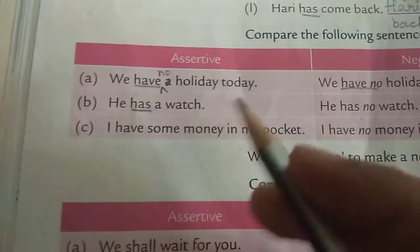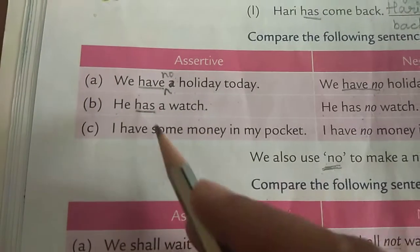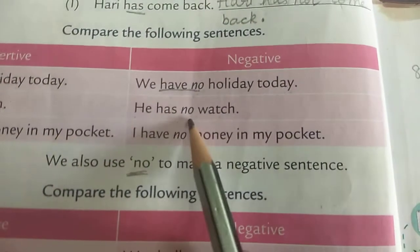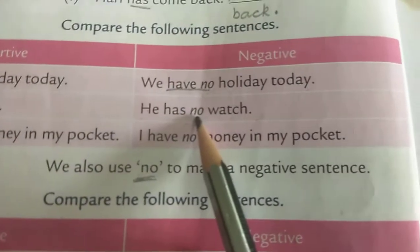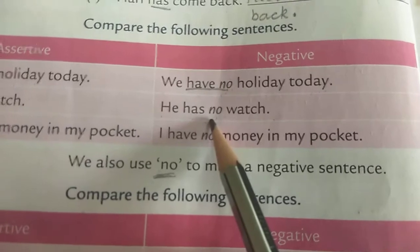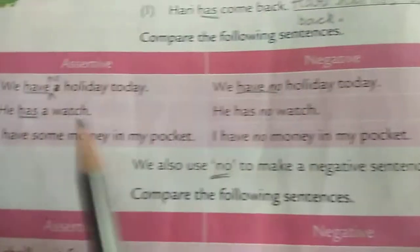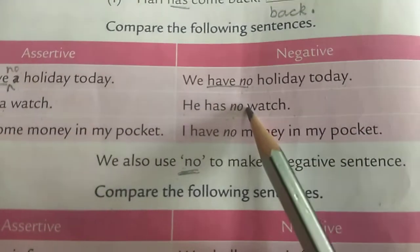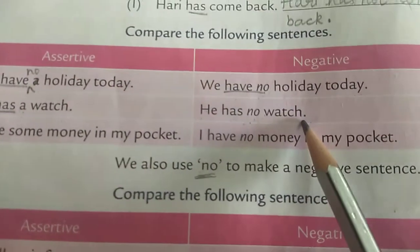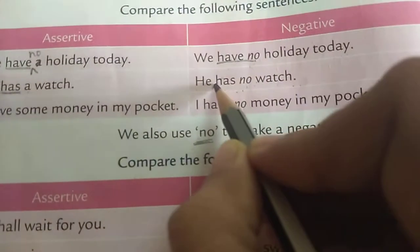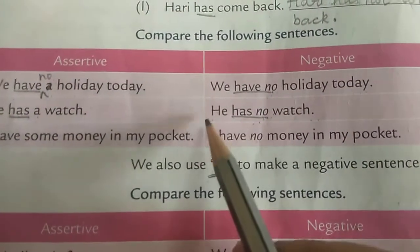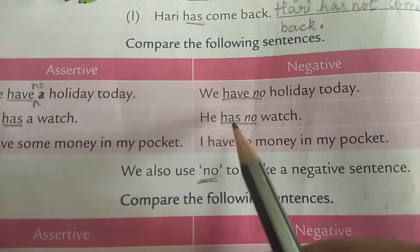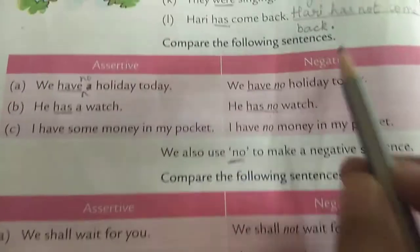In the second sentence, we are going to add 'no', so we will remove the article 'a'. The sentence becomes: 'He has no watch.' 'Has' is the helping verb. We have removed the article 'a' when changing it into a negative sentence: 'He has no watch.'